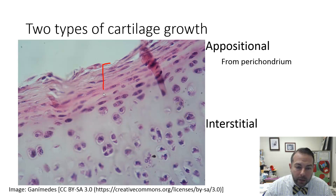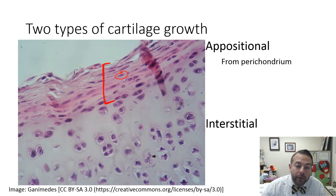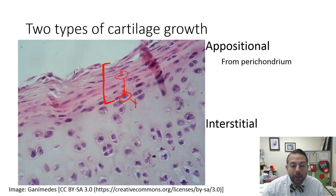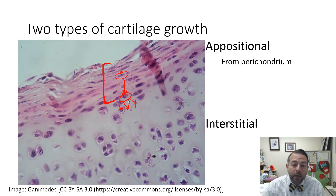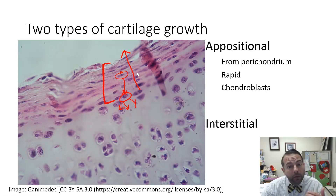The perichondrium is going to contain a number of semi-differentiated mesenchyme cells known as chondroprogenitor cells, and these chondroprogenitor cells will eventually complete their differentiation and become chondroblasts. These chondroblasts will rapidly secrete cartilage matrix and the cartilage will continue to grow. If the chondroblasts are secreting matrix outward, the whole cartilage is going to grow in that direction — so it's appositional growth. It's from the perichondrium, facilitated by chondroblasts, which makes it very rapid.